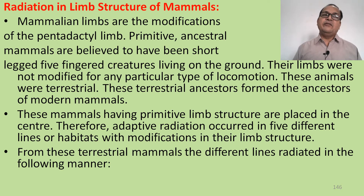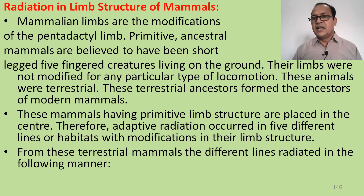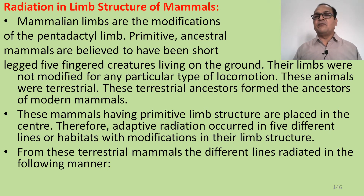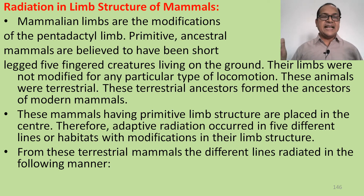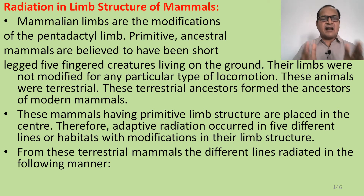Mammalian limbs are modifications of the pentadactyl limb — a limb with five digits. Primitive ancestral mammals are believed to have been short-legged, five-fingered creatures living on the ground. Their limbs were not modified for any particular type of locomotion; these animals were terrestrial. These terrestrial ancestors formed the ancestor of modern mammals. Mammals with this primitive limb structure are placed at the center, from which adaptive radiation occurred in five different lines or habitats with modification of their limb structure.